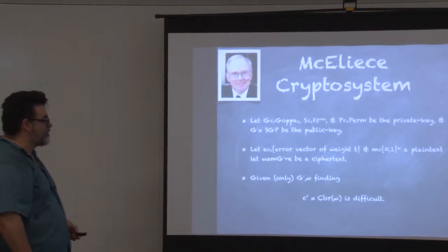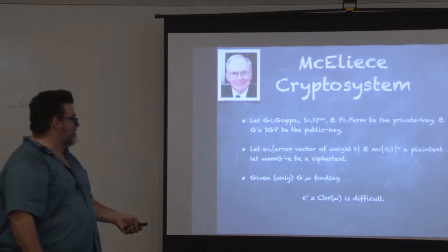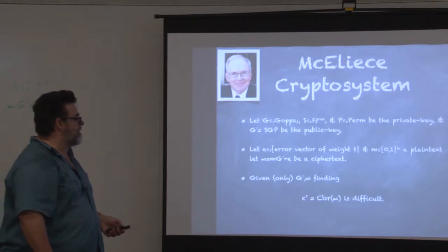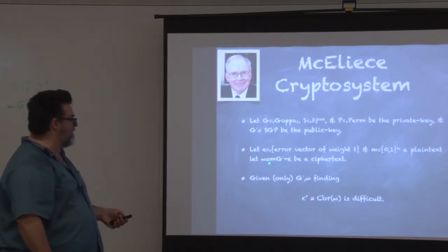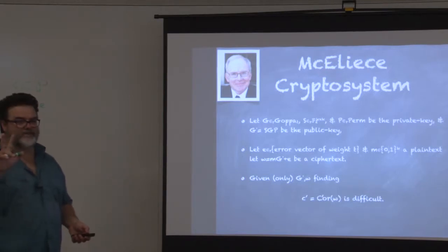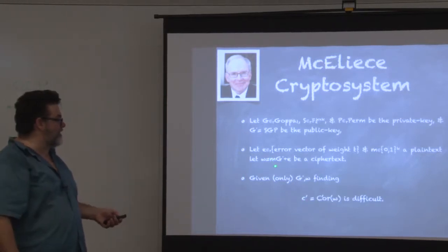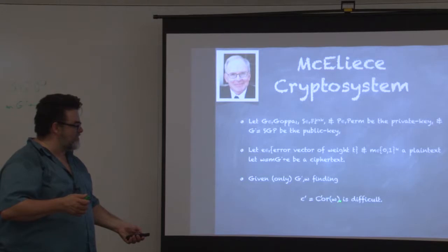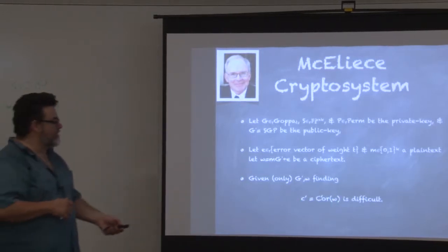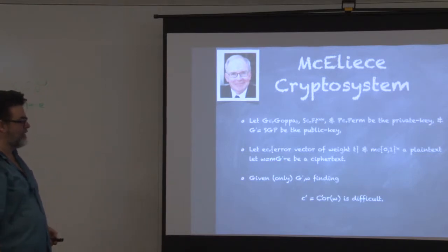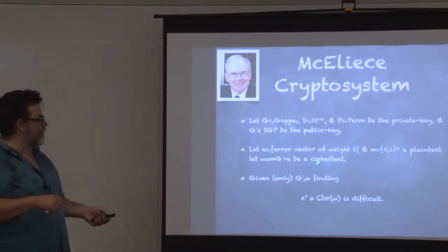Once I get the nearest codeword, I can use the decoding algorithm of the code to recover M. If I know C prime, I can find M because M is just the decoding of C prime. Let me emphasize the distinction: when I say 'decoding,' I mean going back from a codeword to the information word. When I say 'error correcting,' I mean starting from something which is not a codeword and getting to the nearest codeword. To recover M from C prime, you need the decoding algorithm, and that's completely public — if you know G prime, you can do decoding.